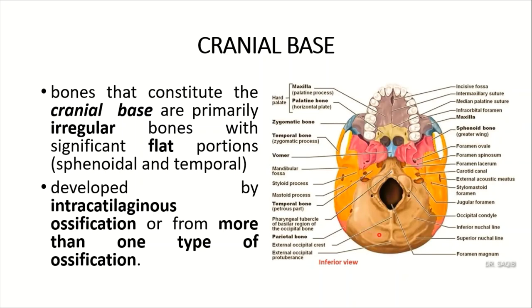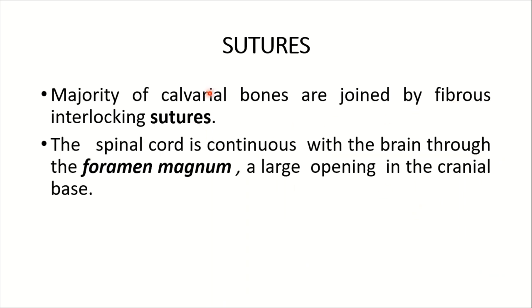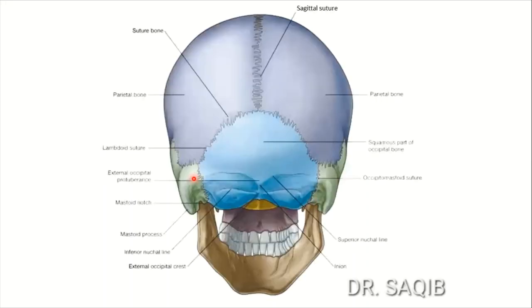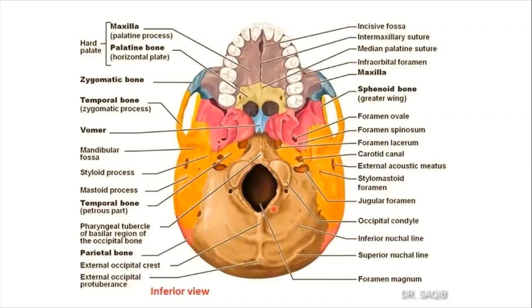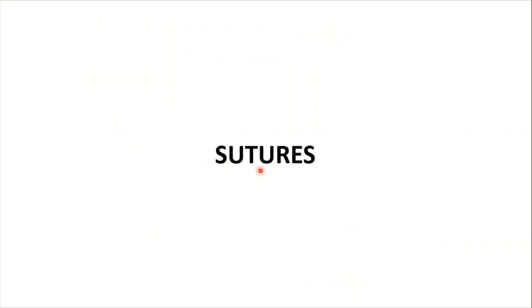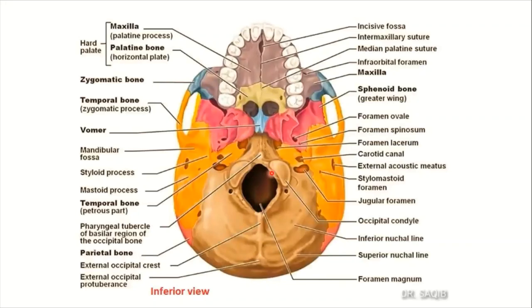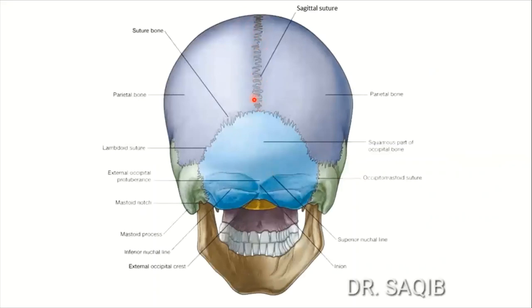Another large bone contributing to the cranial base is the occipital bone. The majority of calvarian bones are joined by fibrous interlocking sutures. The spinal cord is continuous with the brain through the foramen magnum, an enlarged opening in the cranial base. We will see details of the foramen magnum in coming lectures. Here you can also see the sagittal suture and the lambdoid suture.